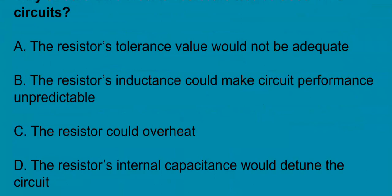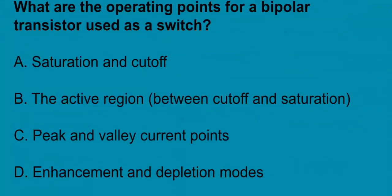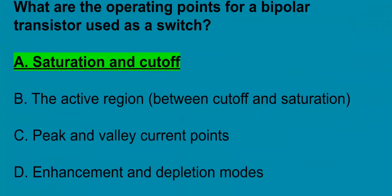G6A06, why should wire wound resistors not be used in RF circuits? That's going to be because the resistor's inductance could make the circuit performance unpredictable. G6A07, what are the operating points for a bipolar transistor used as a switch? It's going to be saturation and cutoff.